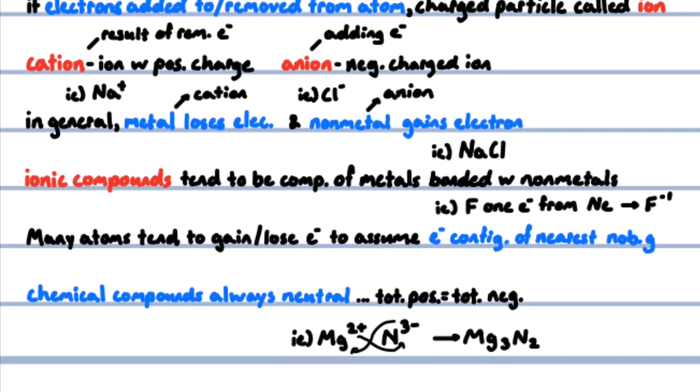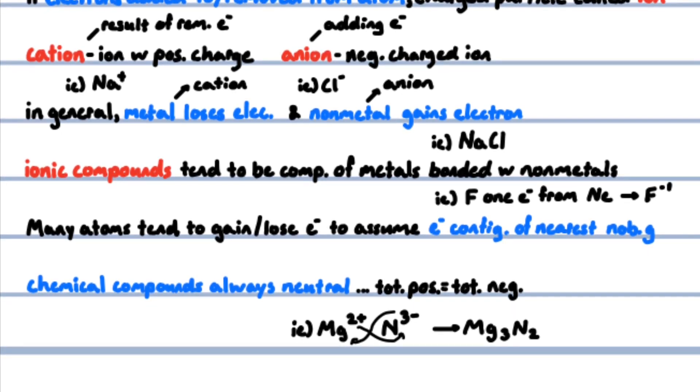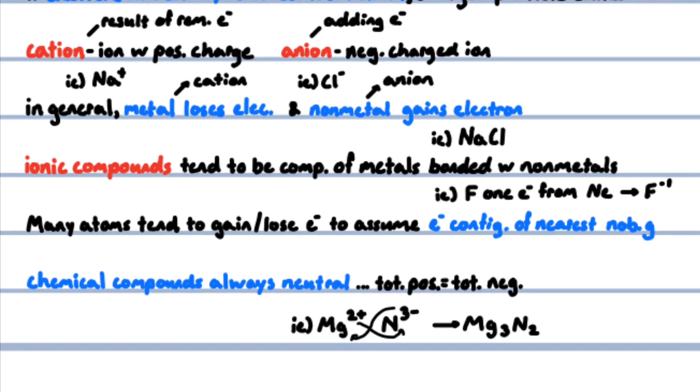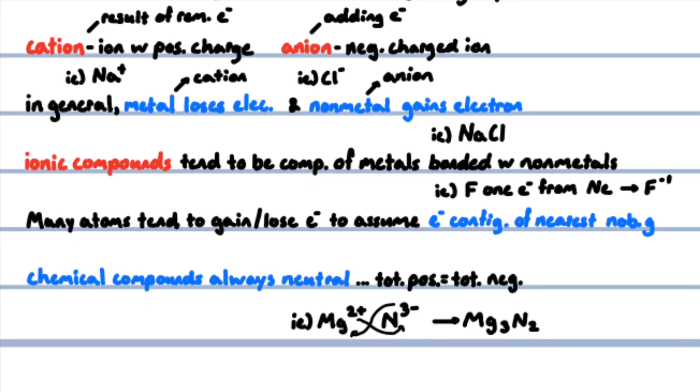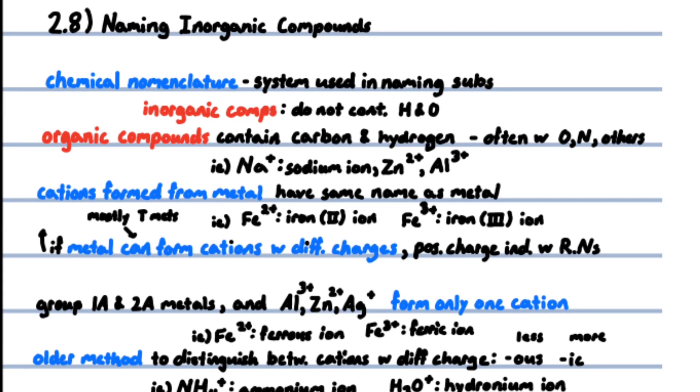If an ionic compound consists of magnesium ions with a positive two charge and nitrogen ions with a negative three charge, move the charge of the metal to the subscript of the non-metal and the charge of the non-metal to the subscript of the metal. The charge is three over two times more per nitrogen ion, so there are three over two times more magnesium ions in the compound.